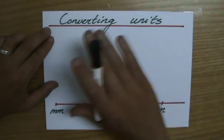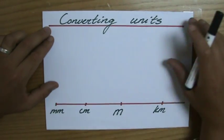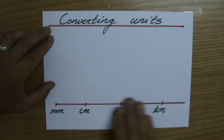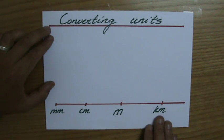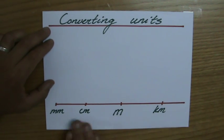a few minutes together and talk about how we convert units. I drew a number line and wrote down millimeter, centimeter, meter, and kilometer, but I could also have written down milligram